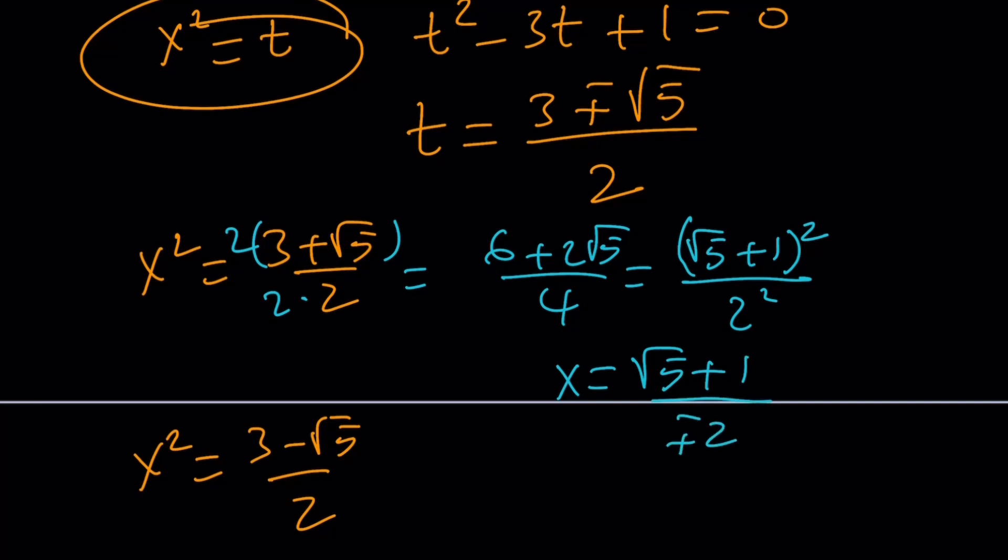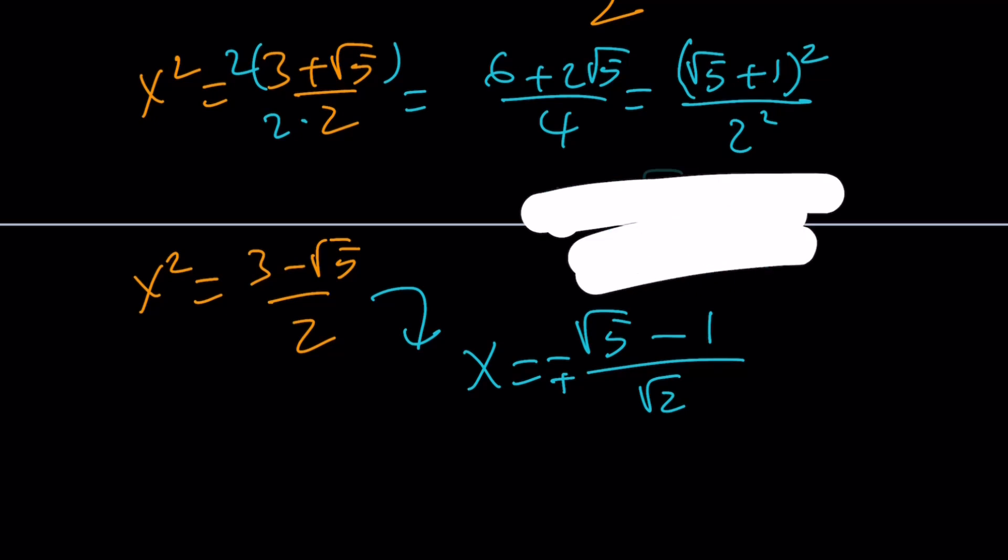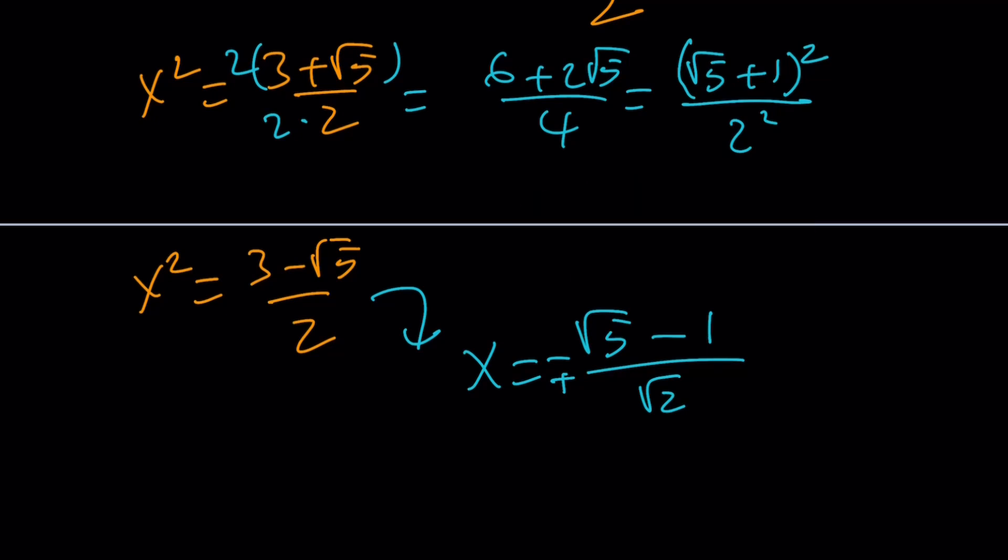So, plus minus 2, and you can put that plus minus in the front as well. And then, we're going to get, similarly, we're going to get the other two solutions from here. Root 5 minus 1 divided by plus minus 2. Let me put the plus minus here, so that makes more sense. And let me write the other solution here. Maybe here.